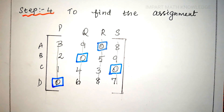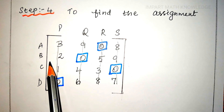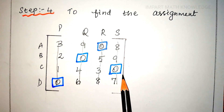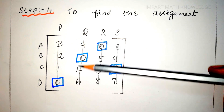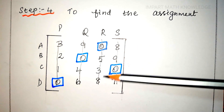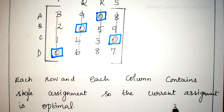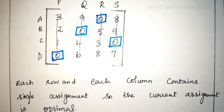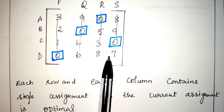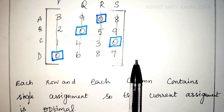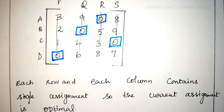Now check whether each row and each column contains a single assignment. The first, second, third, and fourth rows each have one assignment. Similarly, the first, second, third, and fourth columns each have one assignment. Each row and column contains a single assignment, so the current assignment is optimal. We can also verify: the number of rows equals 4 and the number of squares marked equals 4, confirming the current assignment is optimal.